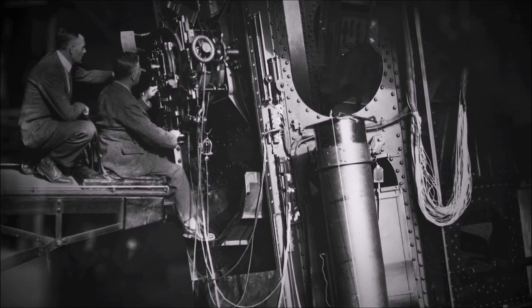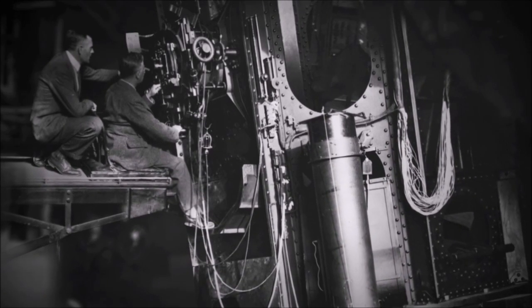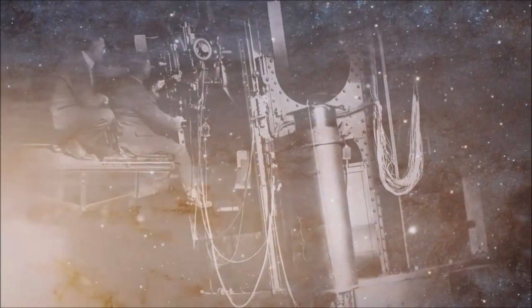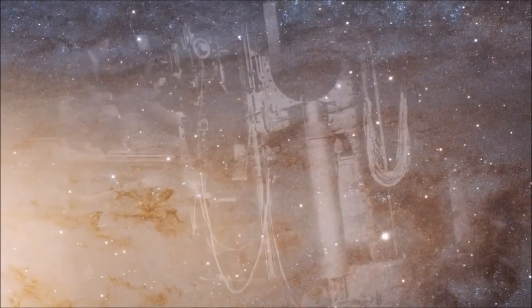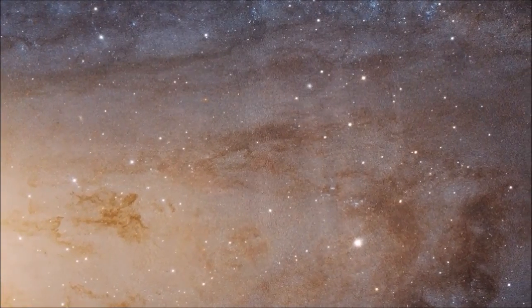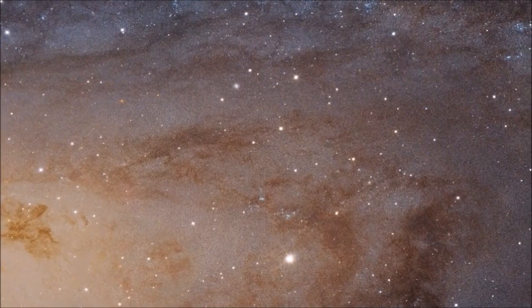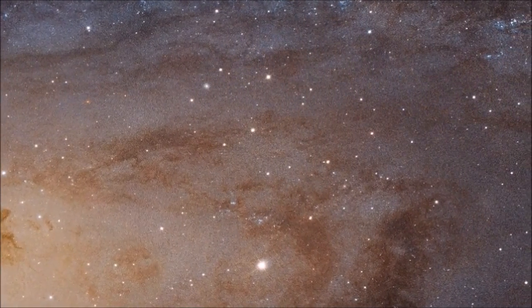In the year that Edwin Hubble identified variable stars in several spiral nebulae, he used these stars to calculate the distances to these nebulae. His observations proved that these stars were far too distant to belong to our Milky Way.